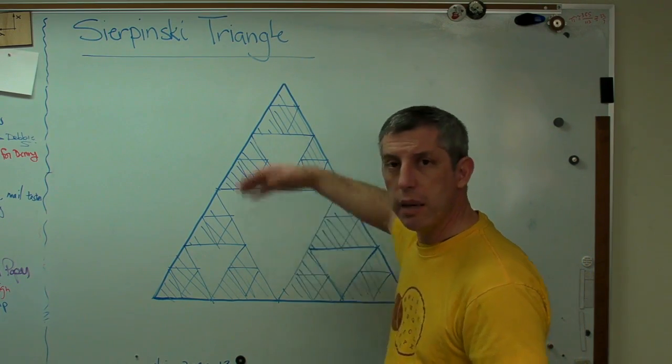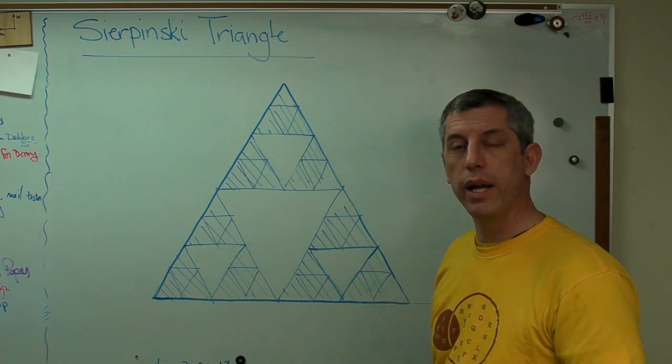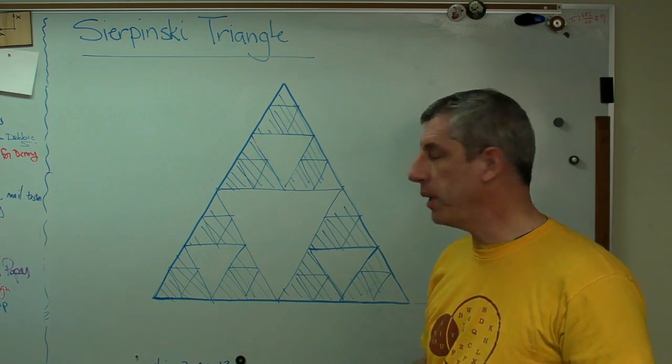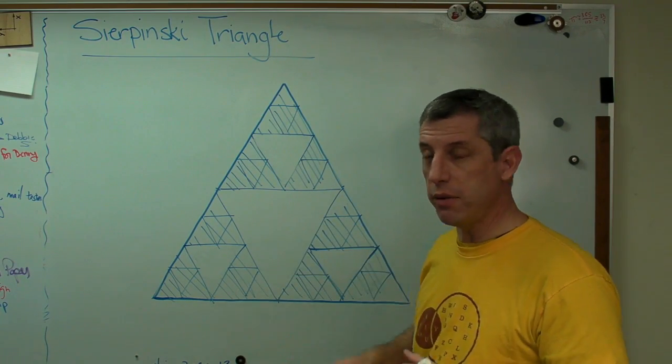Okay, so I can keep doing this. I can make S sub infinity if I want. Now, there's two properties to a Sierpinski triangle that make it really, really interesting, and they're easy to figure out. Let's look at the area.